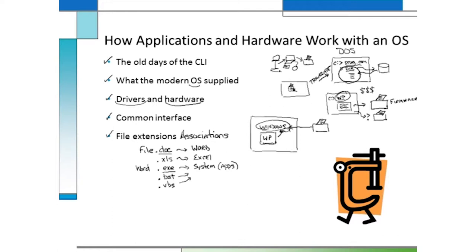That's why the operating system is your link to the computer and to the attached hardware. That's what you interact with to open an application, print a document, work with a barcode scanner, or use the mouse and keyboard — all of those usually require some sort of driver.